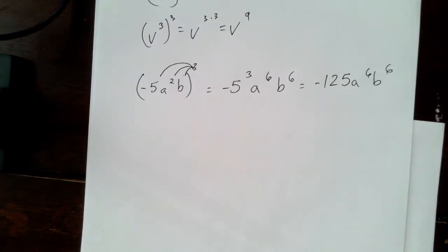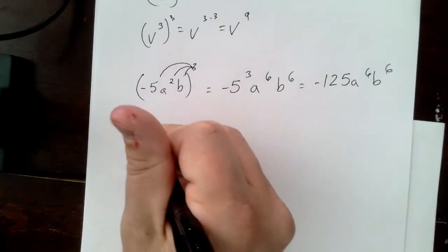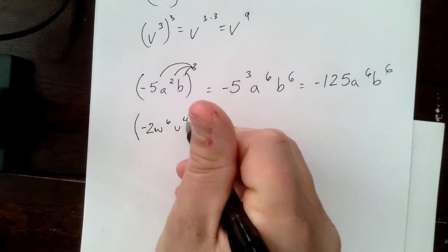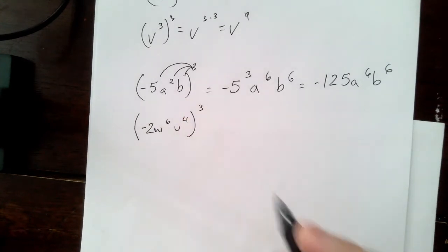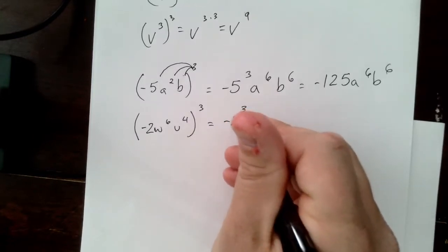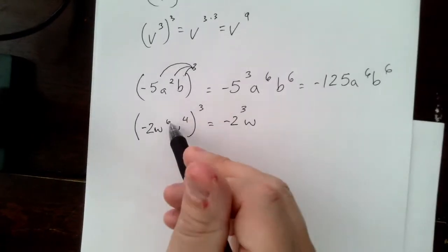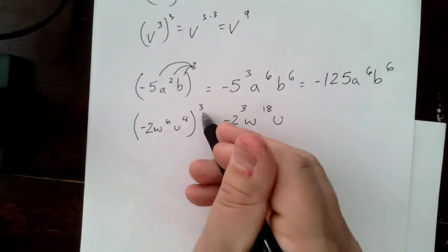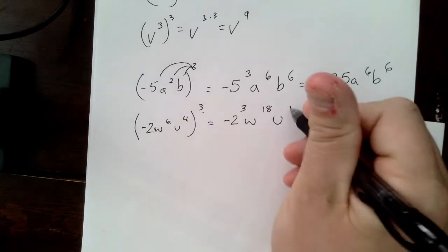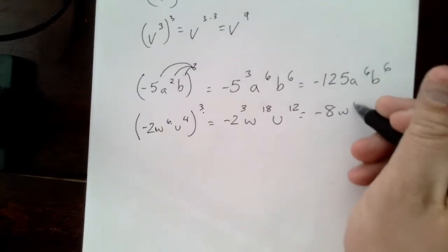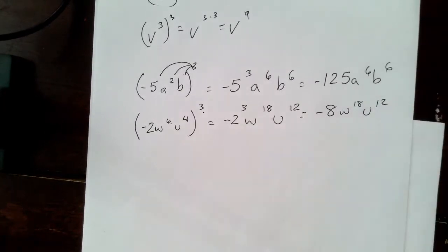Let's do another one like that. If we have negative two, w to the sixth, u to the fourth, all raised to the third, this becomes negative two to the third, w six times three is eighteen, and u four times three is twelve. So it becomes negative eight, w to the eighteenth, u to the twelfth.